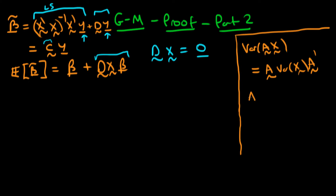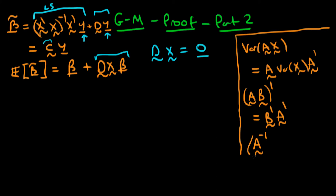Another result we're going to make use of is the fact that for the product of two matrices AB, the transpose of that product is equal to B transposed times A transposed — the transpose operator reverses the order of multiplication. The final result is that for any matrix A to the power minus one, the transpose of that matrix equals A transposed to the power minus one. So the order in which we apply the inverse and transpose operators is unimportant in matrix algebra.